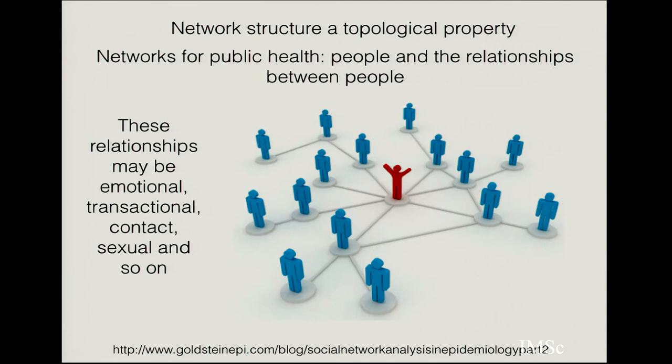The structure of a network is a fundamental topological property. When talking about networks for public health and infectious diseases, we want to talk about people and the relationships between them — emotional, transactional, contact, sexual relationships, and so on. For disease-relevant networks, you might be interested in contact networks or transactional networks. For sexually transmitted diseases, you would want to know about sexual connections between individuals in the population.